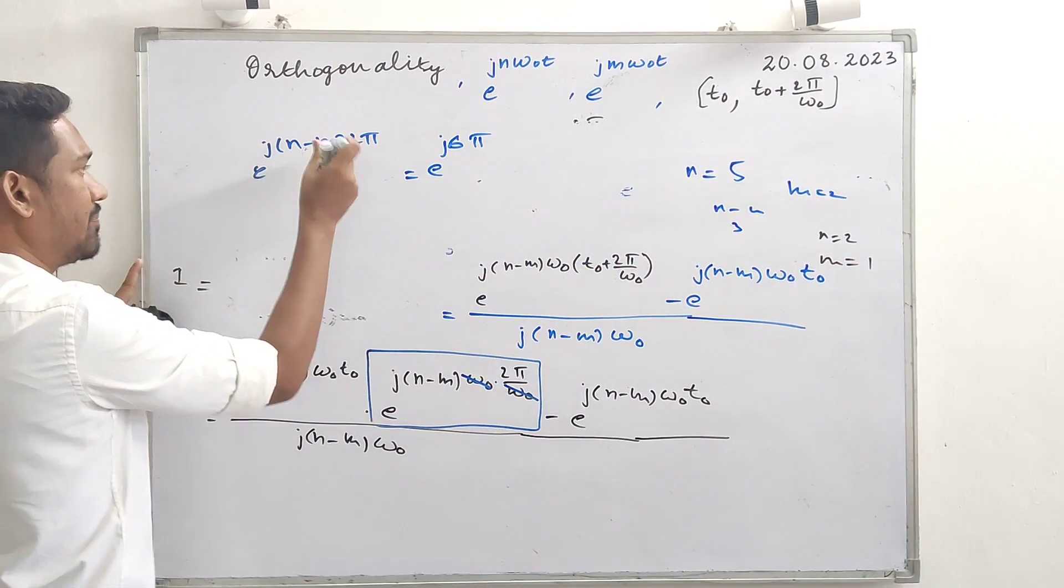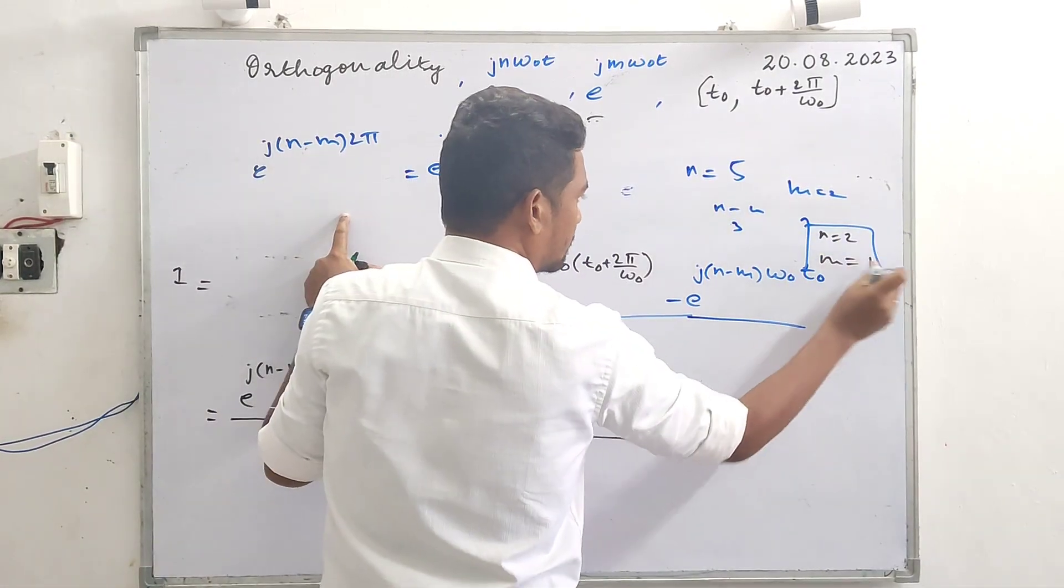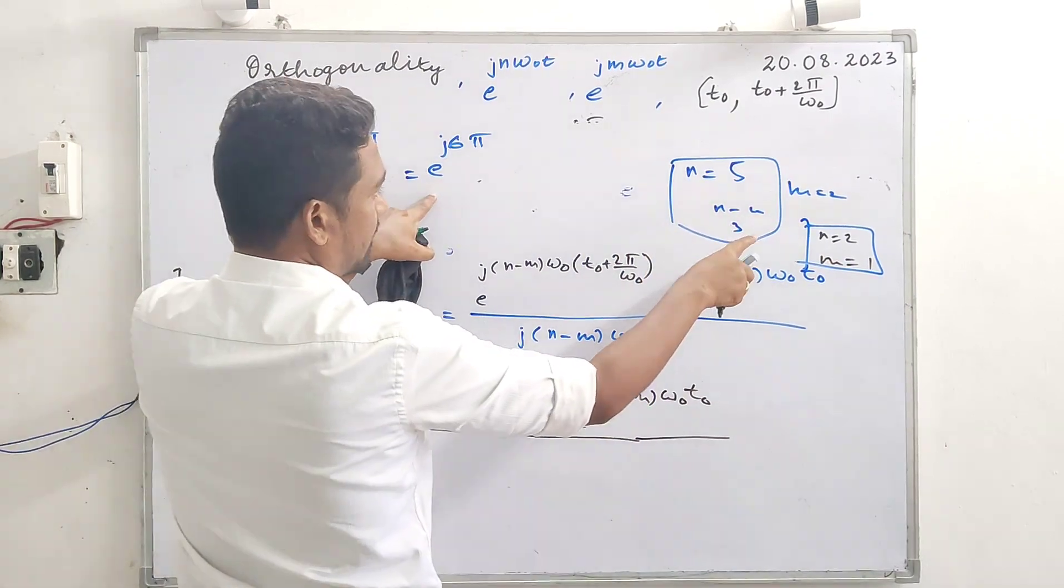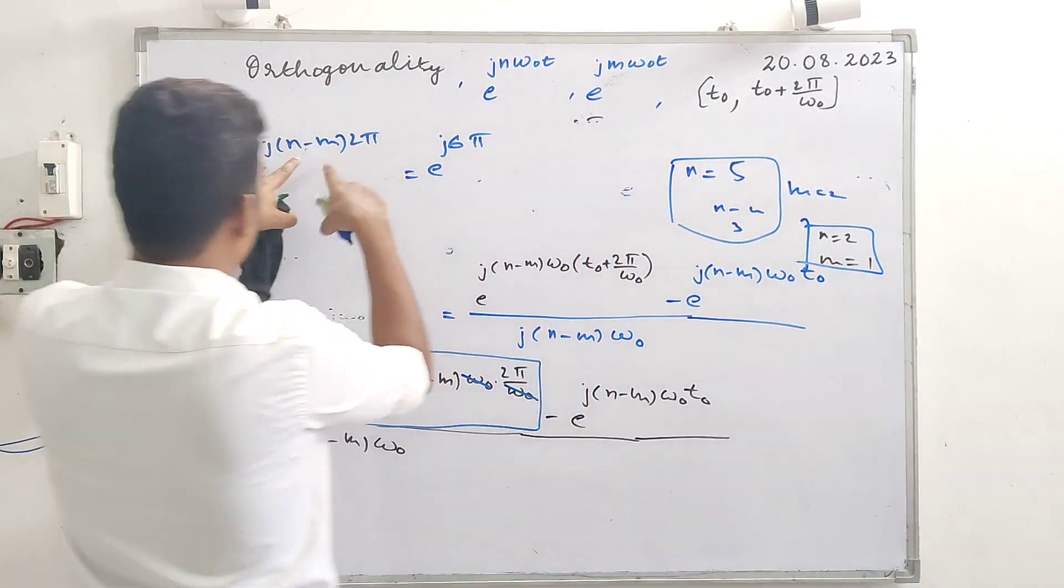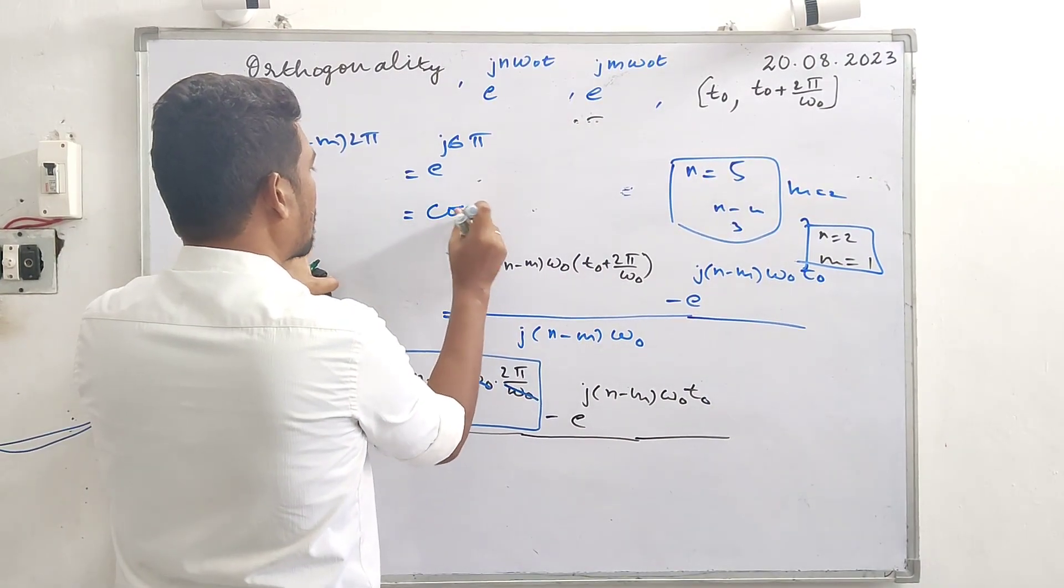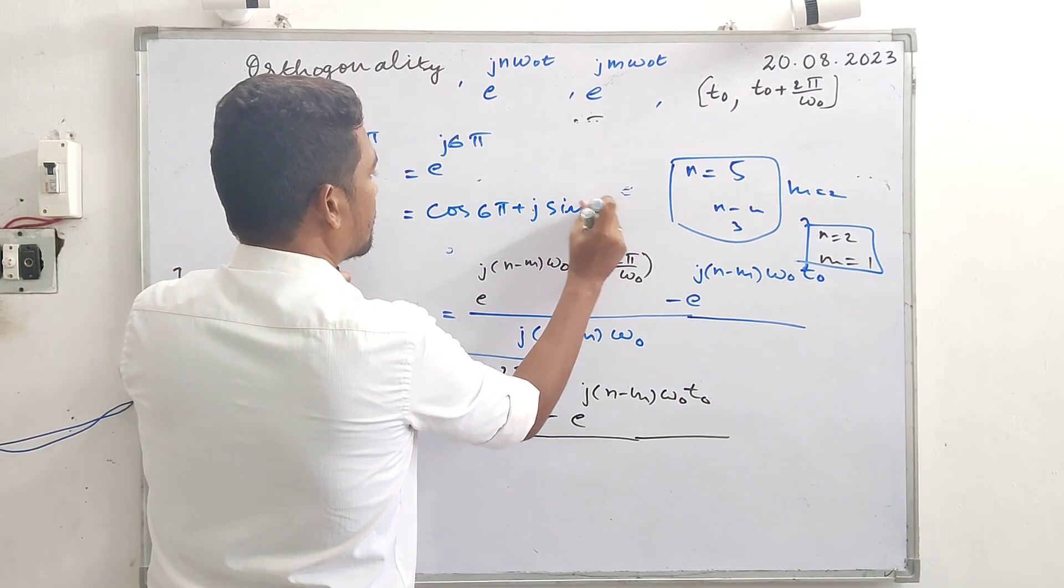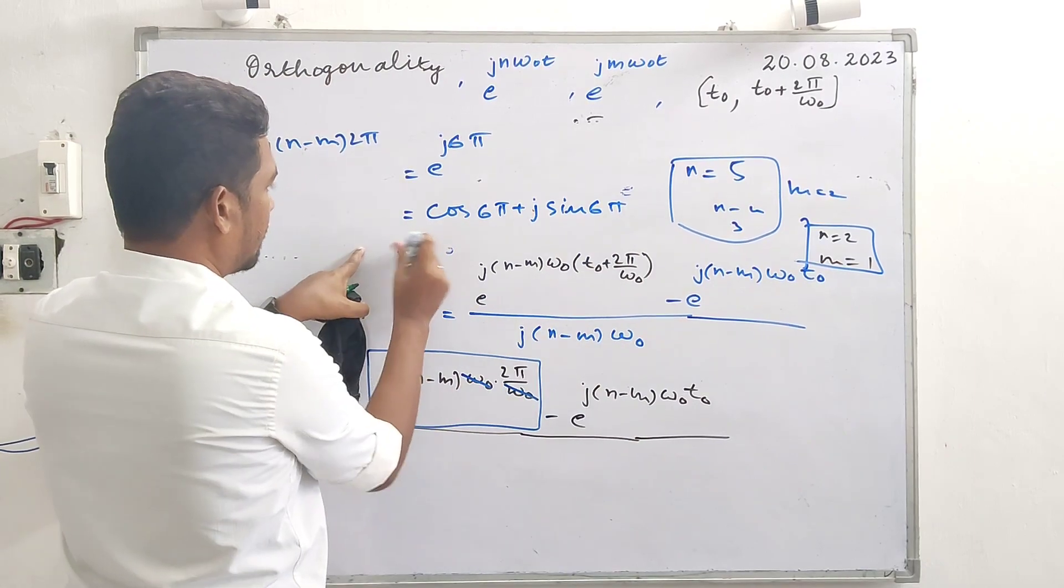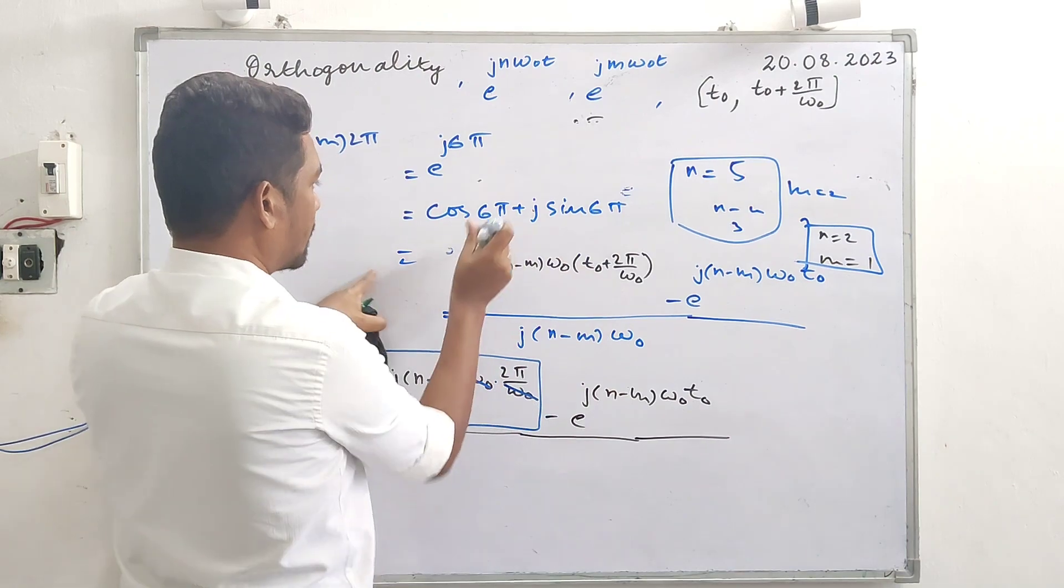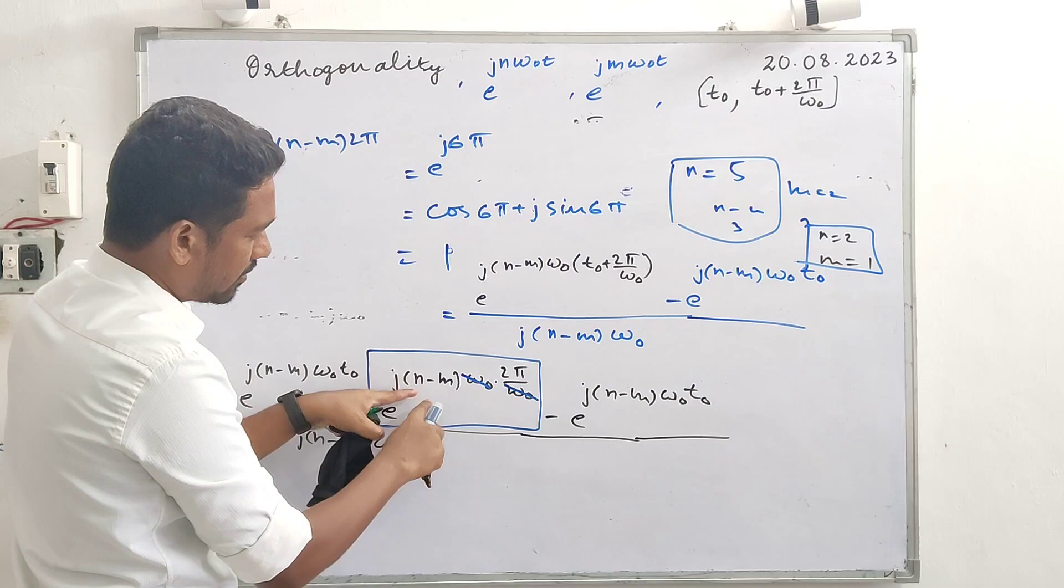For example, if n minus m is equal to 3, so 3 into 2, by Euler's identity: cos 6 pi plus j sin 6 pi. Any values of pi: sin will be zero and cos is 1. So for any integer values, different combinations of n minus m, this will be 1.